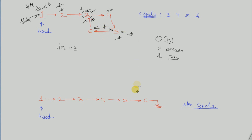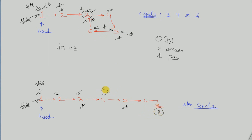Let us run the same algorithm with a singly linked list with no cycle. SPTR and FPTR will both point to head. We move slow pointer by one step and fast pointer by two steps. Slow will come to three, fast will come to five. Then slow will come to four and fast will point to null. When fast pointer hits null or comes to the last element of a non-cyclic linked list we stop — there is no cycle, so we don't print anything.